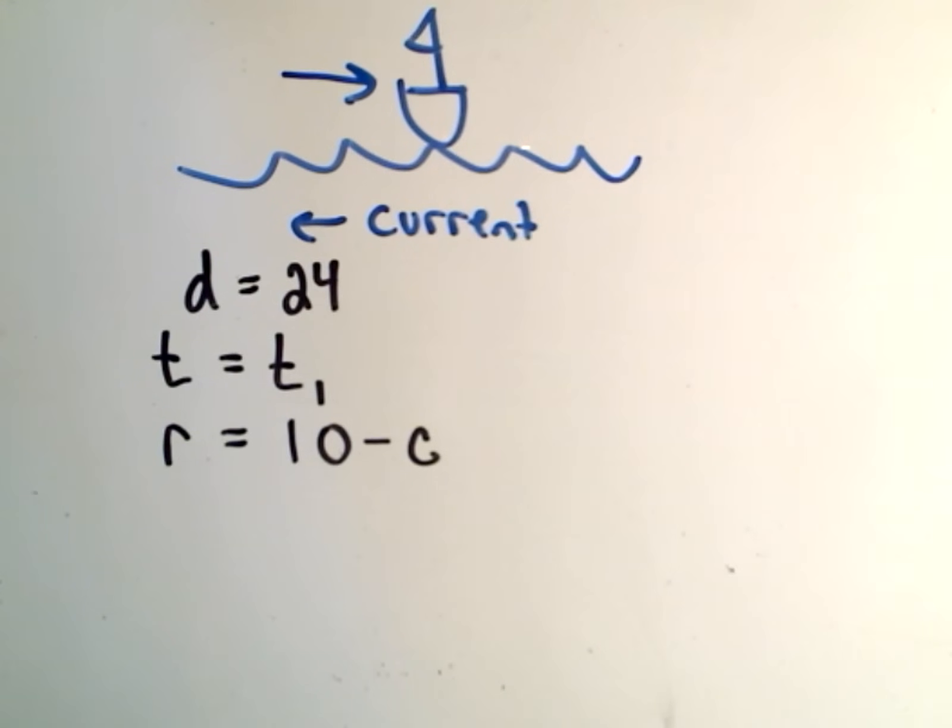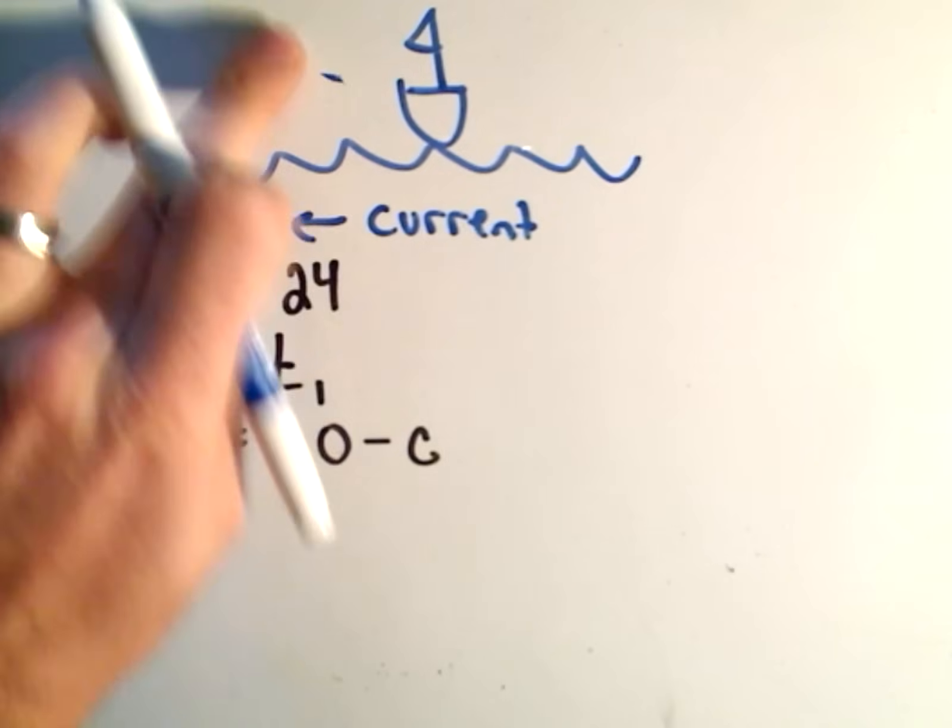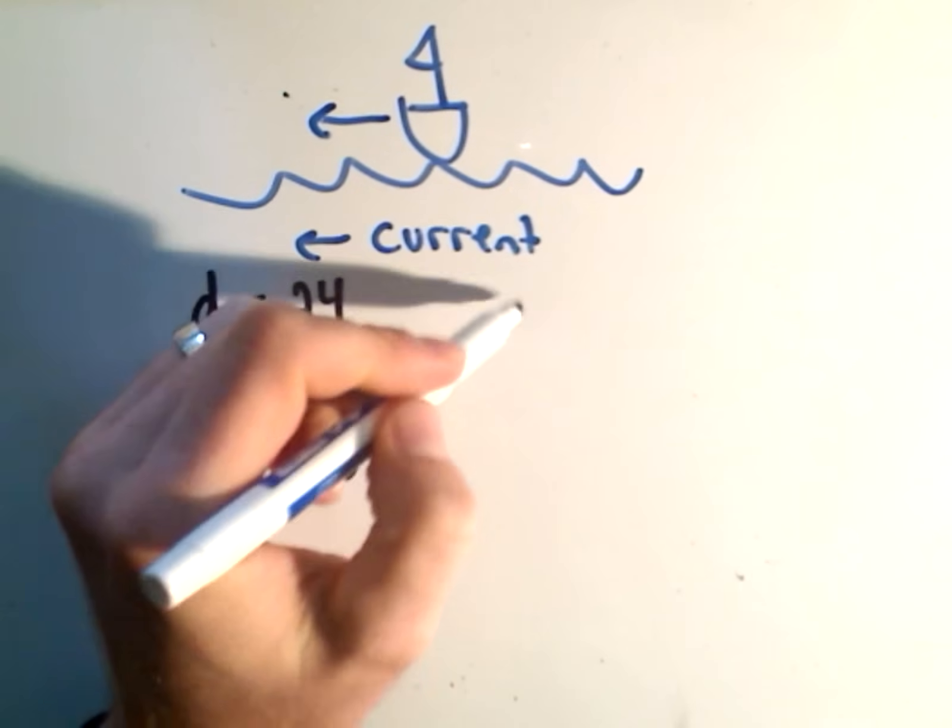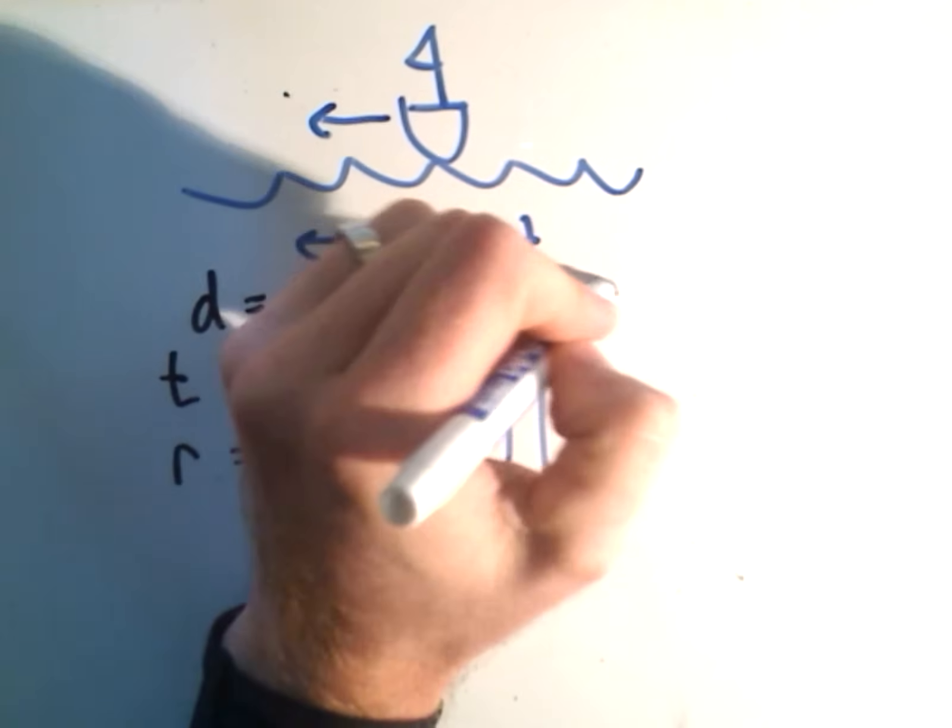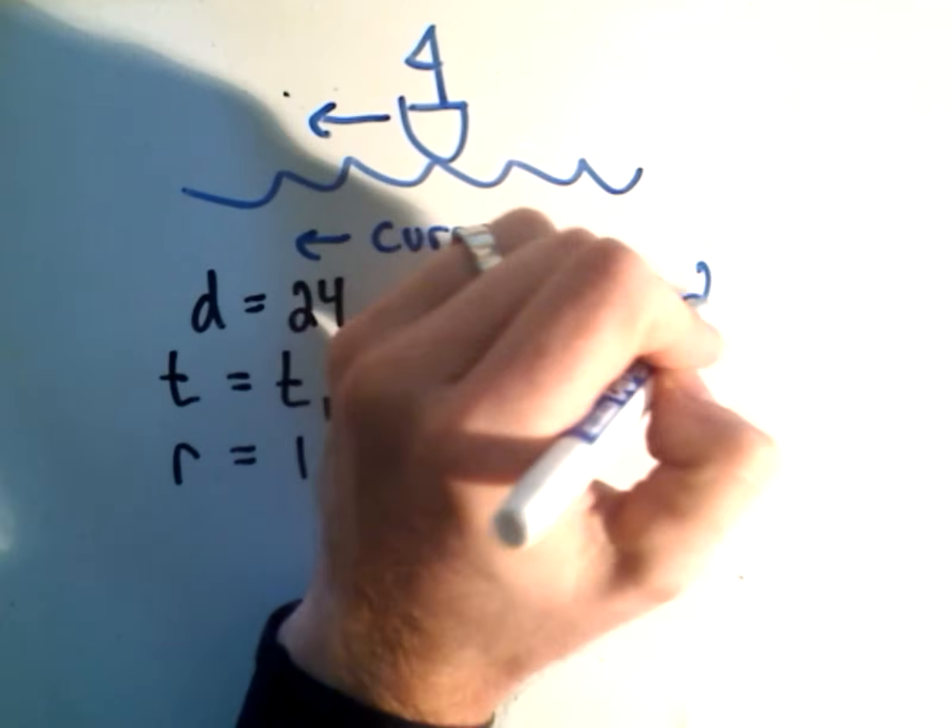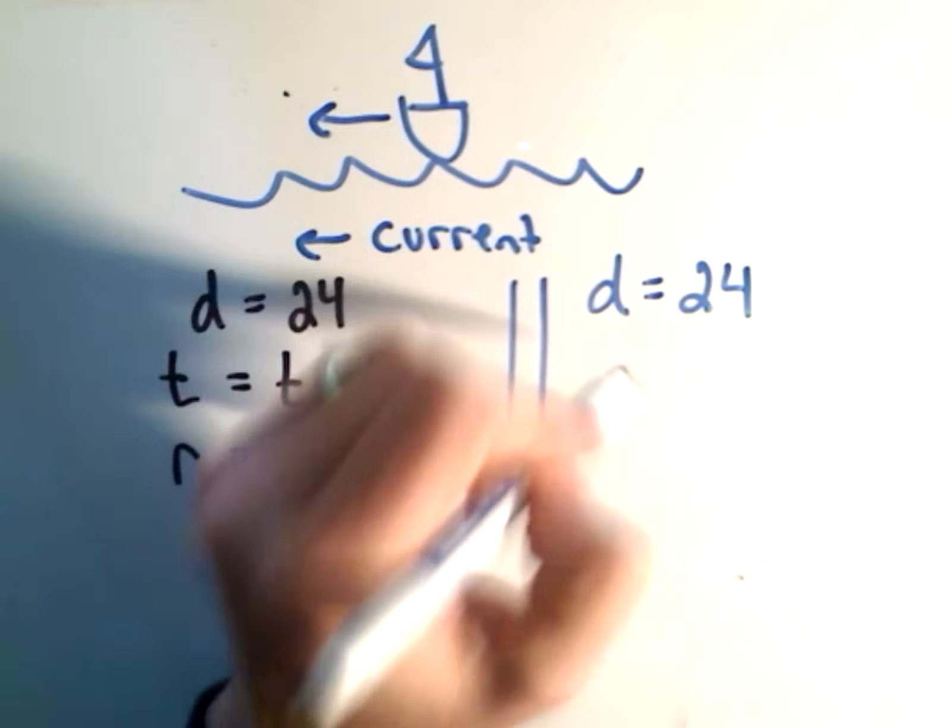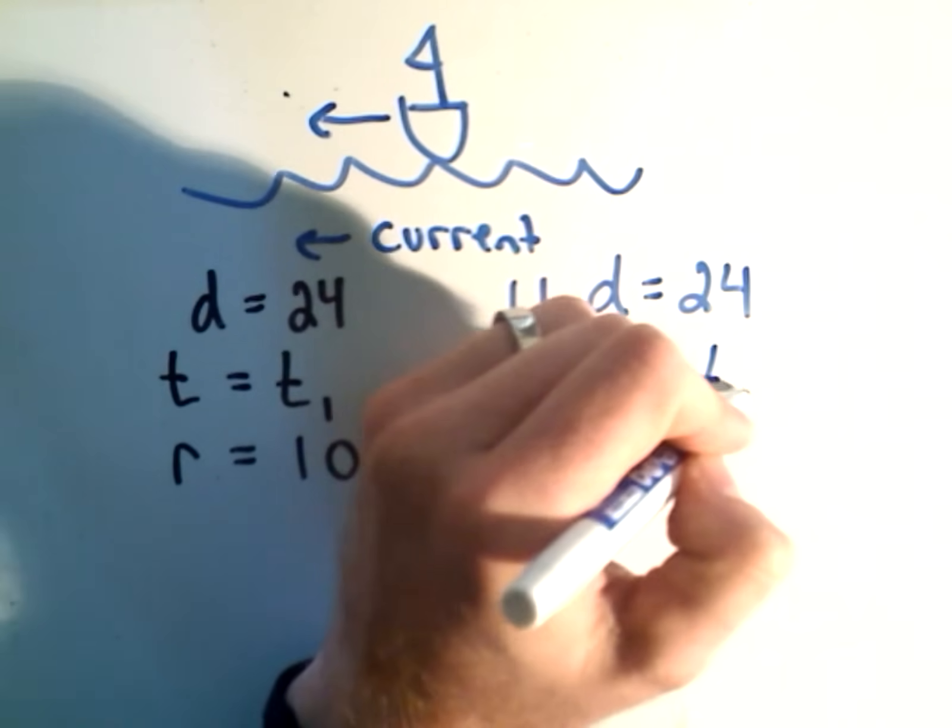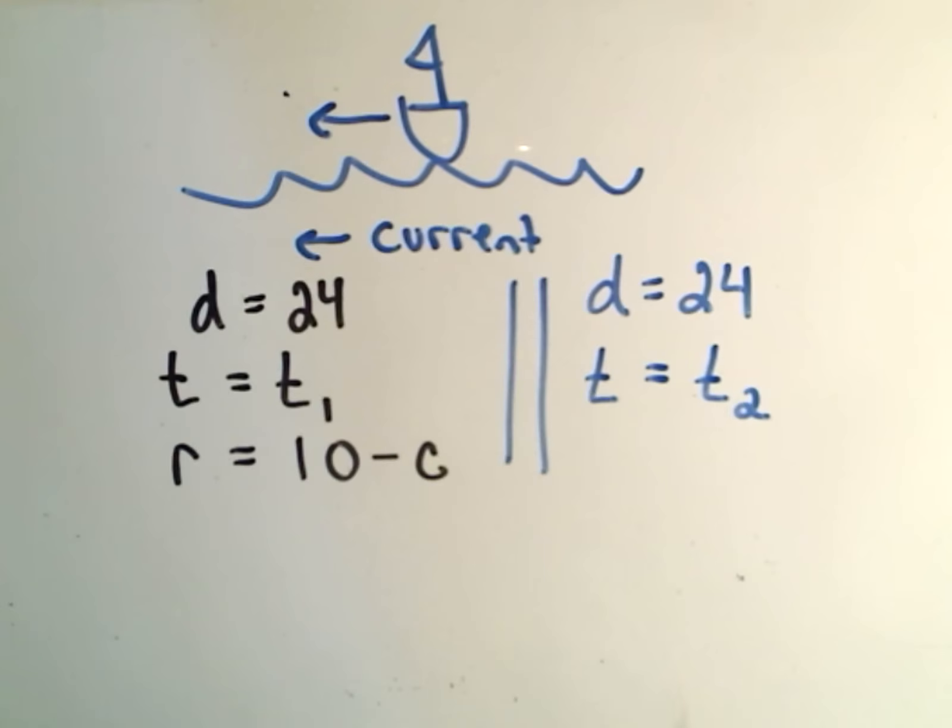Okay, well, in the other situation, when the boat is actually turned around and then it's going back downstream, well, in that case, what's going to happen? Well, we still know that the distance is equal to 24. Okay, we know that the time on the second part of the journey, well, we don't really know. We'll call that something different, T2.